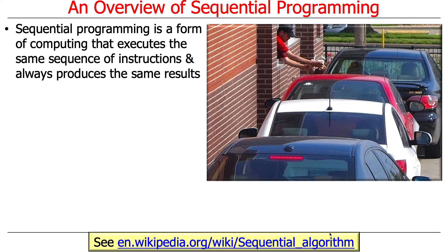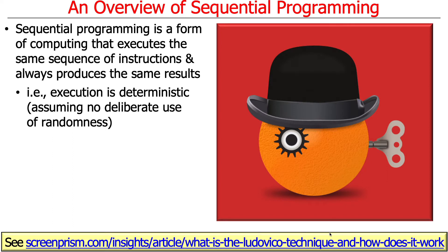I always love metaphors — you will see visual metaphors and analogies on all my slides. When I think about sequential, I think about a drive-through at a fast food restaurant like McDonald's or Arby's, where each thing is done one at a time — basically a flow of cars. Execution is deterministic: no randomness, no non-determinism. You always get the same result and things execute in the same order, very much in lockstep.